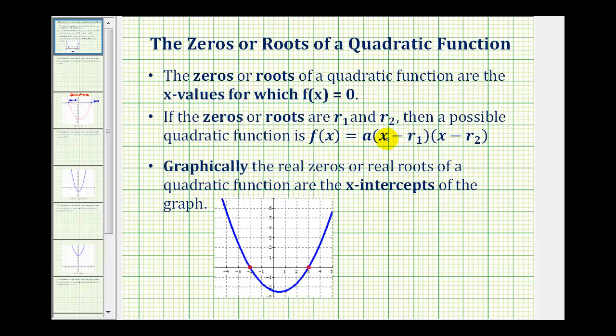Notice by subbing in r sub one, this factor would be zero. Therefore, the function value would be zero. If we sub r sub two into the second factor, this factor would be zero, giving us a function value of zero as well.